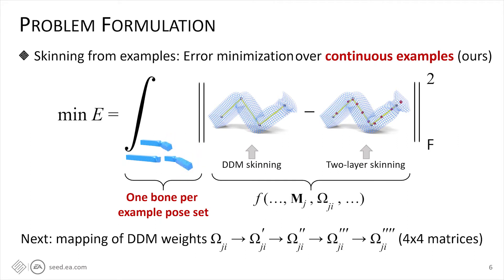We can perform simplification on this function by a series of transformations on m and omega. Here, omega sub ji is the original DDM weight of bone j on vertex i. And the transformations were mapped omega to omega prime, then omega prime to omega 2 prime, and so on. Each map here will resolve a particular problem, such as linearizing DDM model, handling the skeleton hierarchy, handling the bind pose, and the range of motions for example poses.